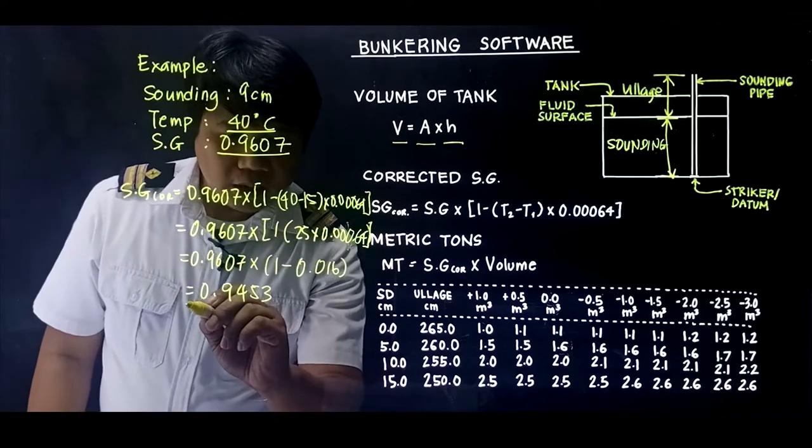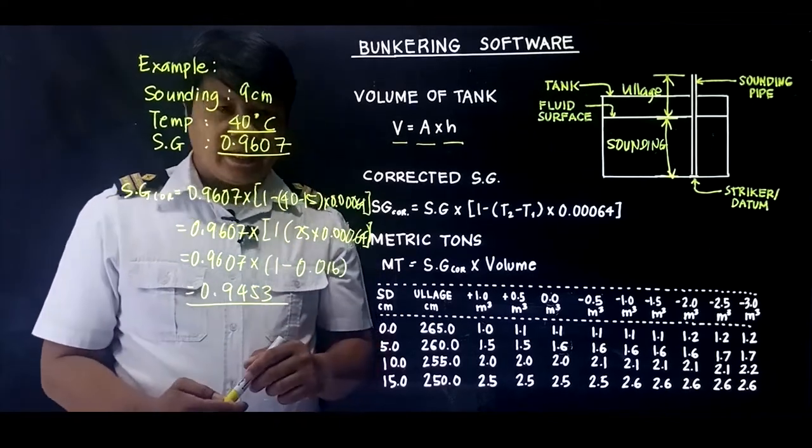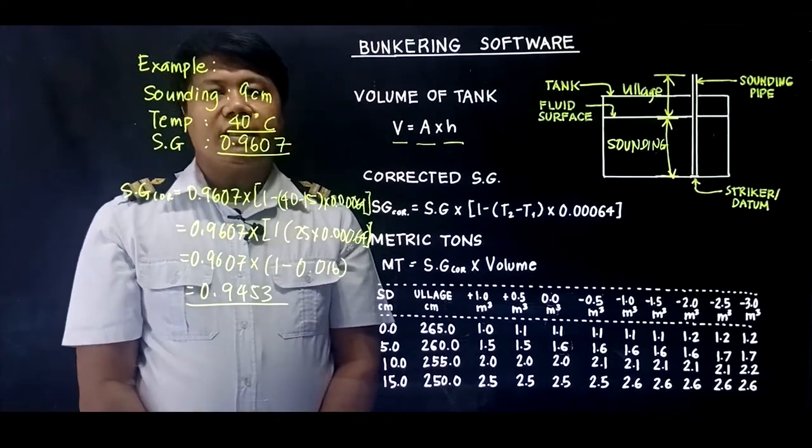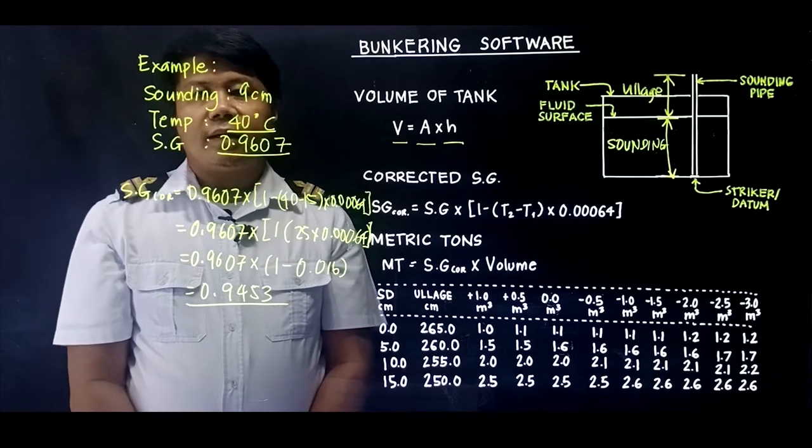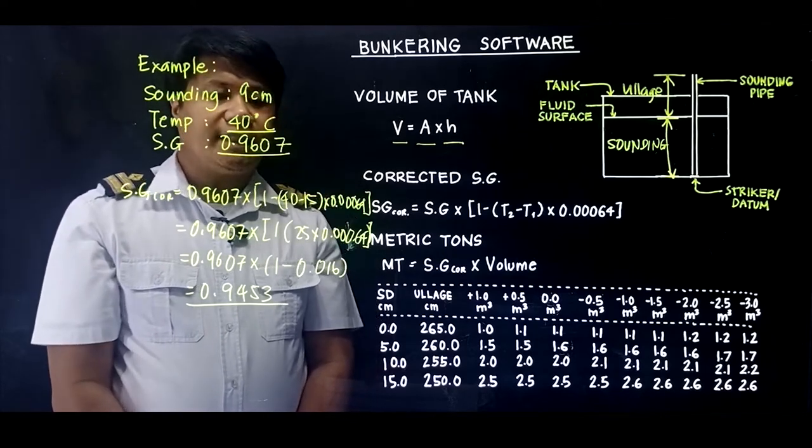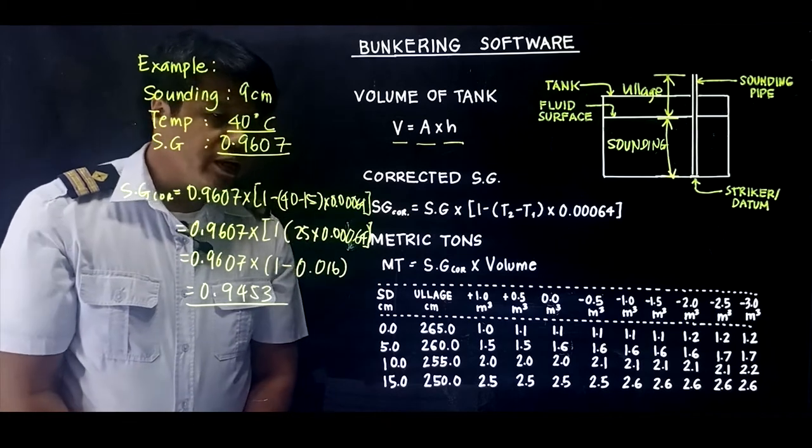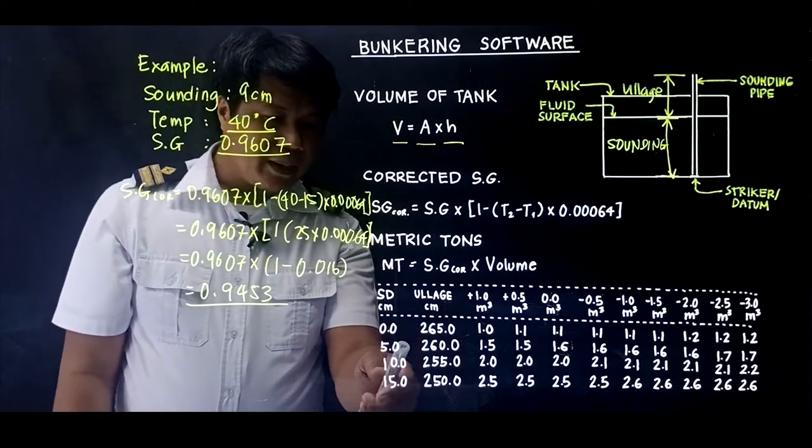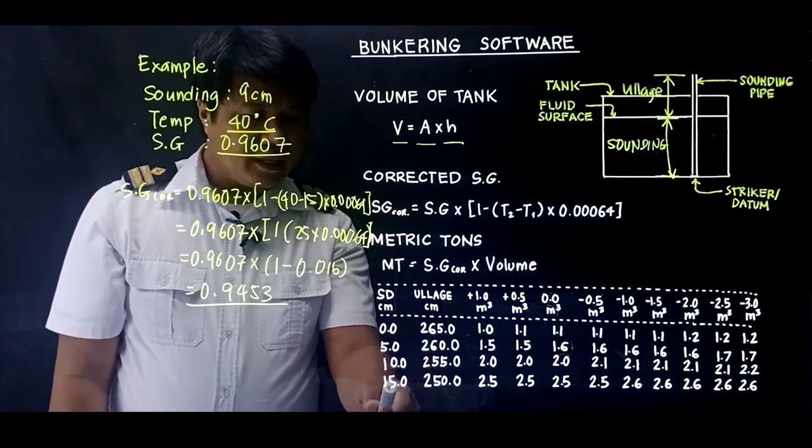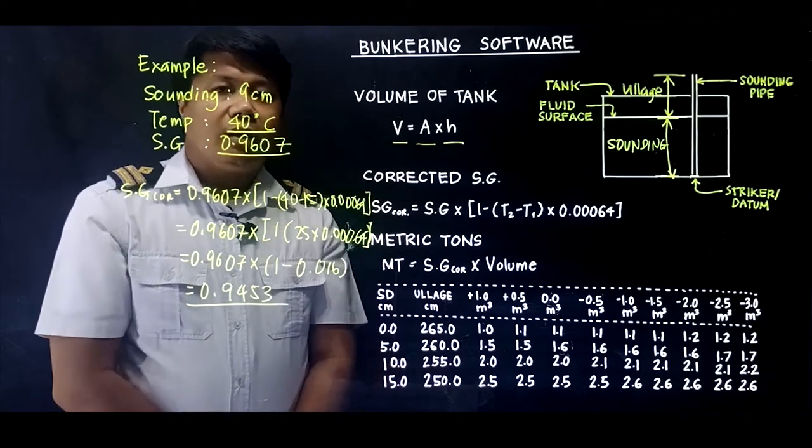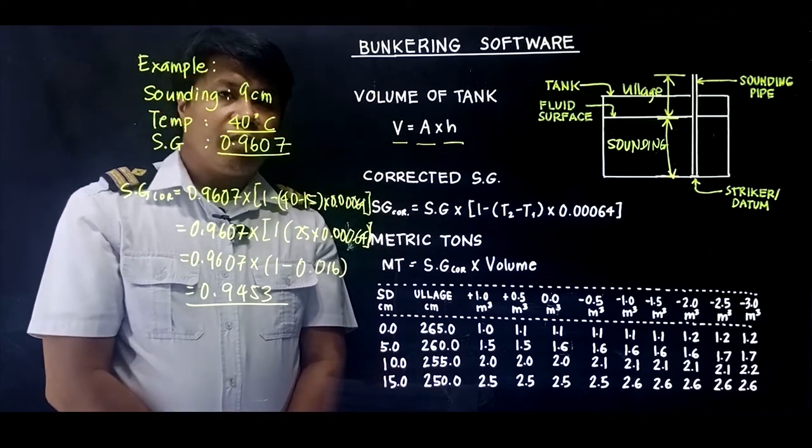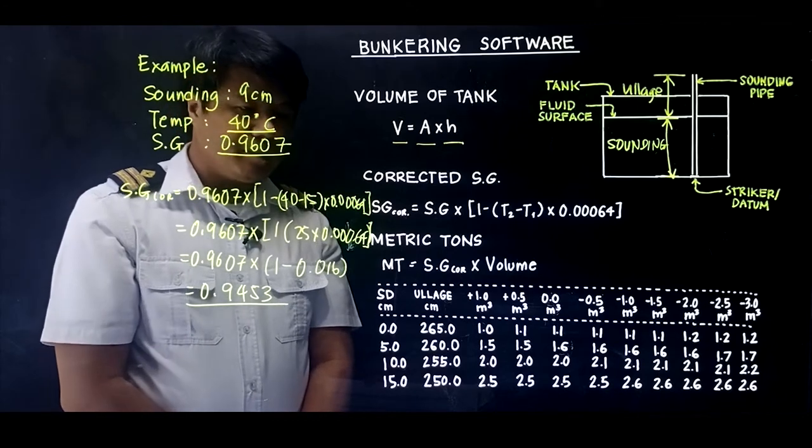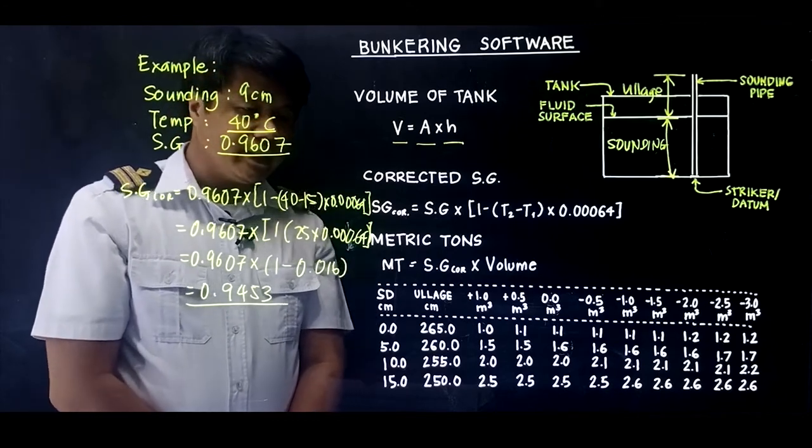So this is now our corrected SG. The second step is to determine the volume of the tank using the sounding of 9 cm. Since we only have 0, 5, 10, 15, and so on, we need to find the volume of the tank at 9 cm. So we need to interpolate this.